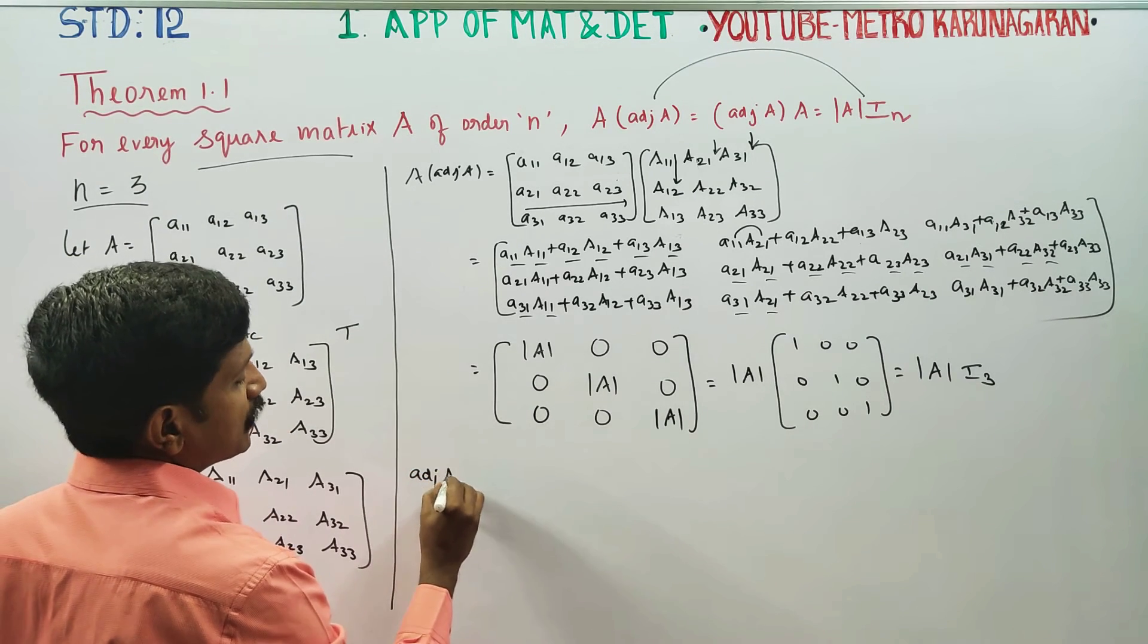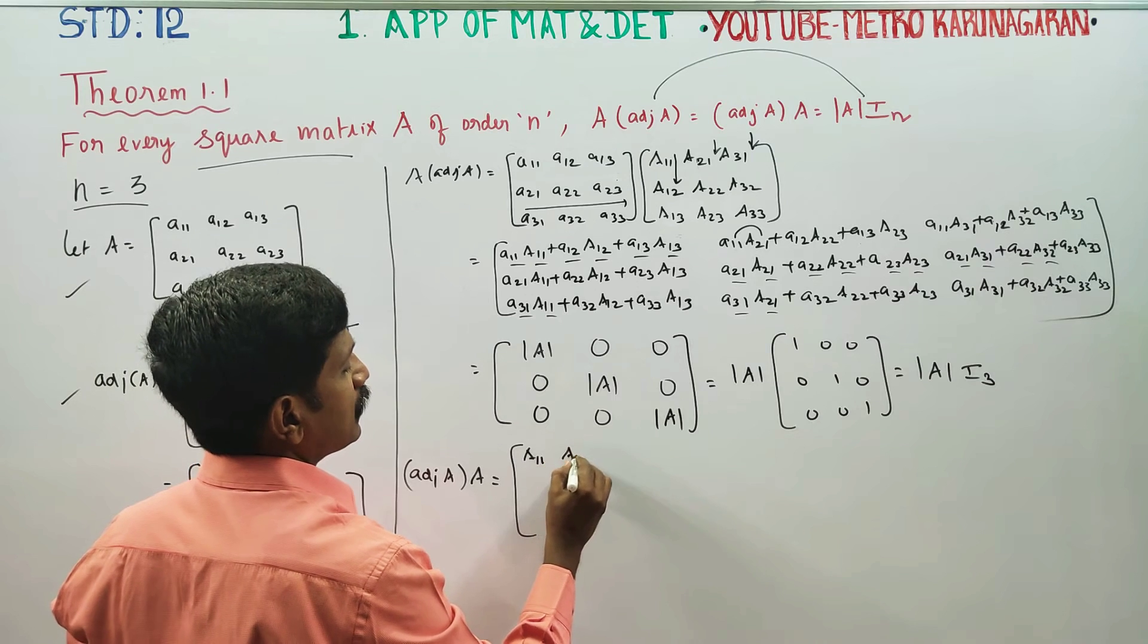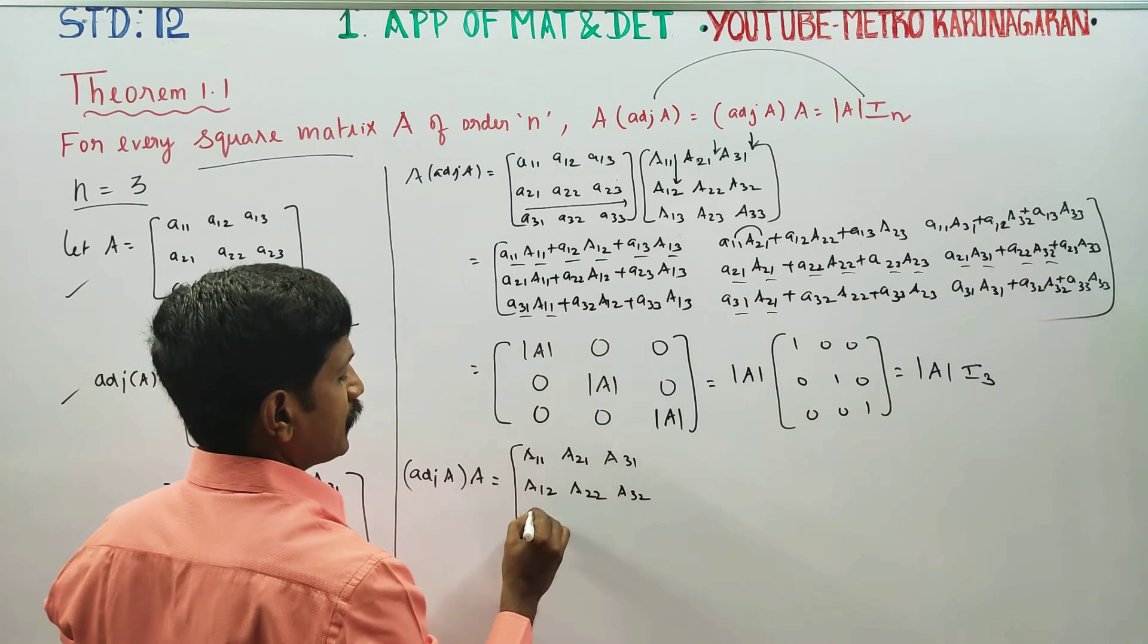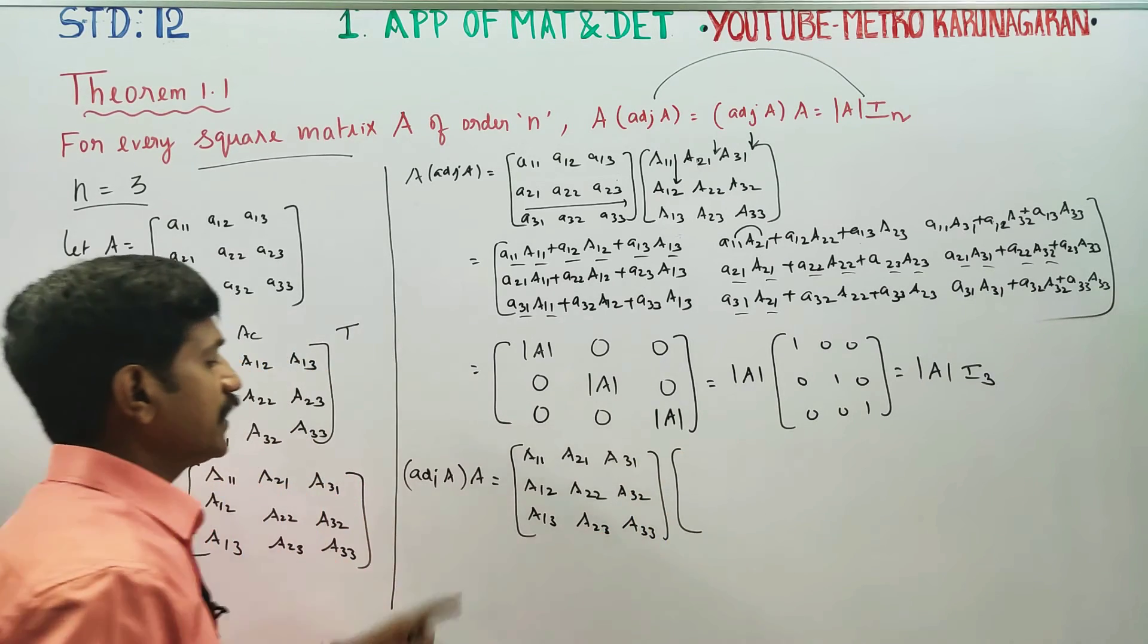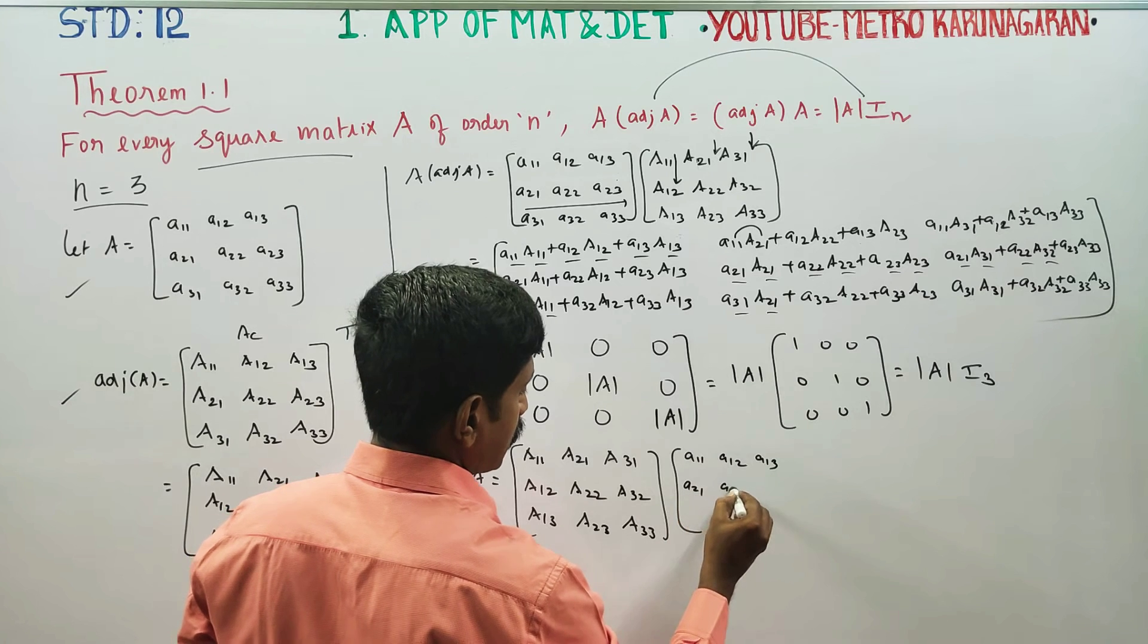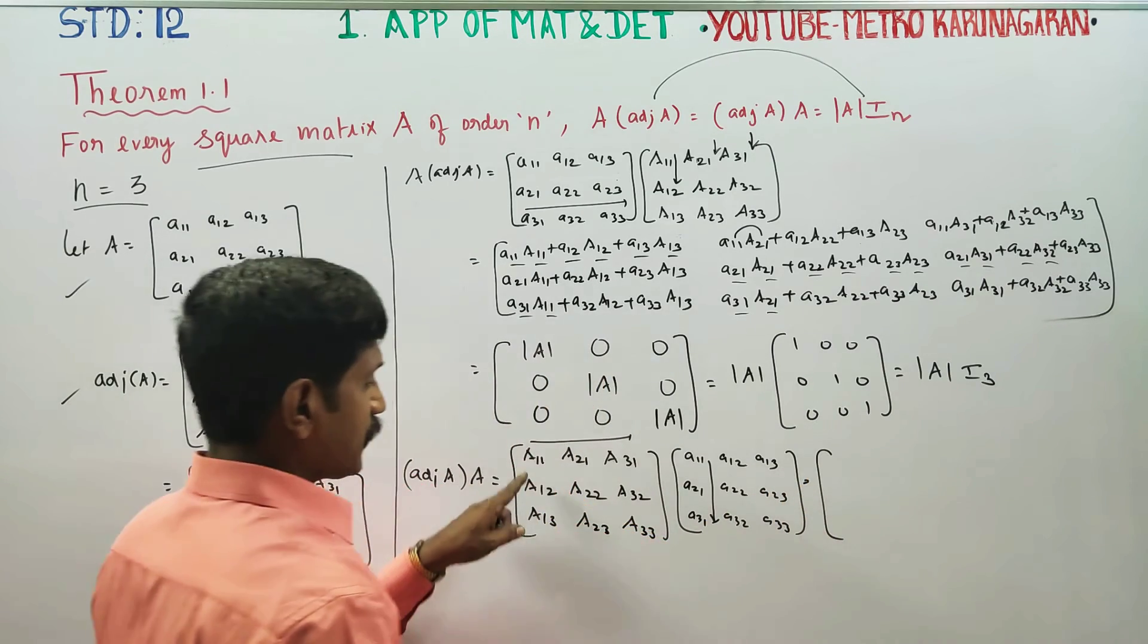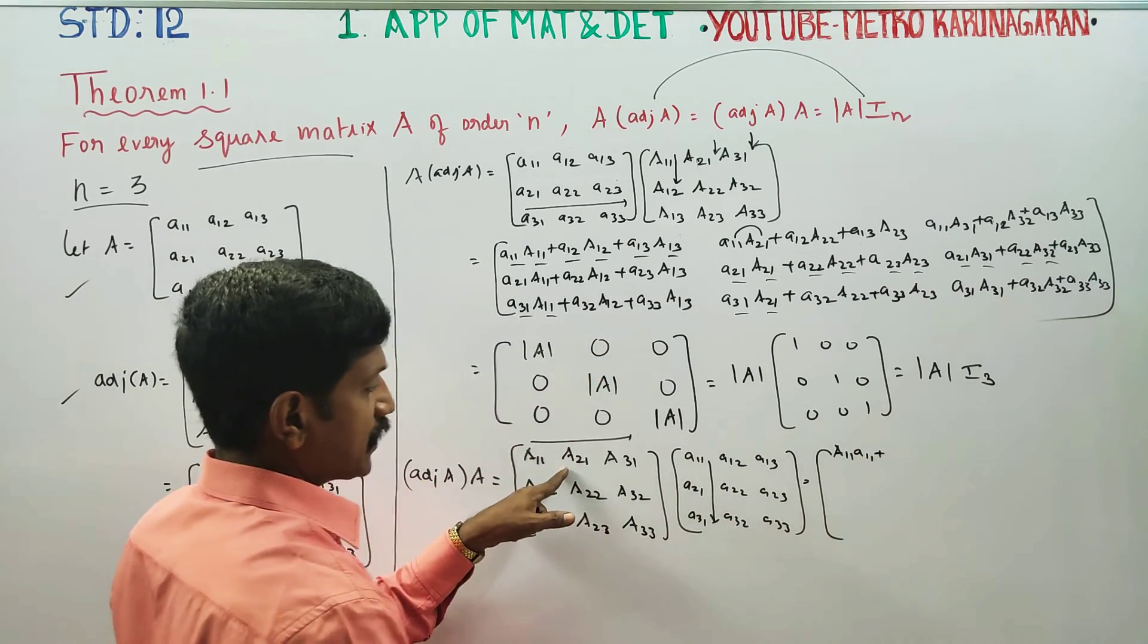Then stage number 2, again you have to start with adjoint A into A. Write the adjoint matrix: A11, A21, A31, A12, A22, A32, A13, A23, A33. Into the A matrix: a11, a12, a13, a21, a22, a23, a31, a32, a33. Again multiplication starts, row into column.